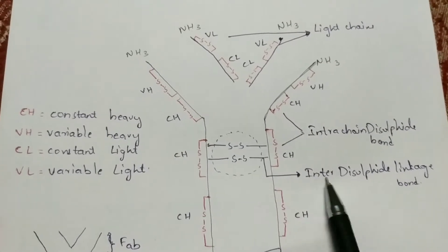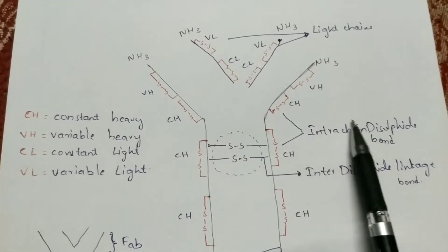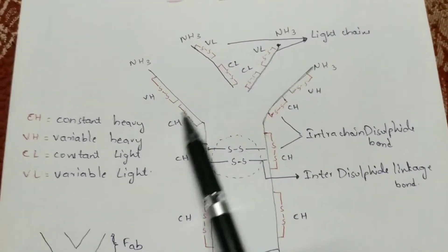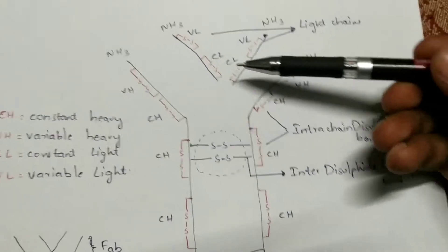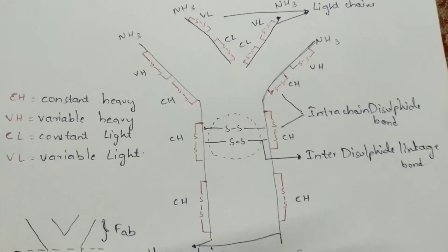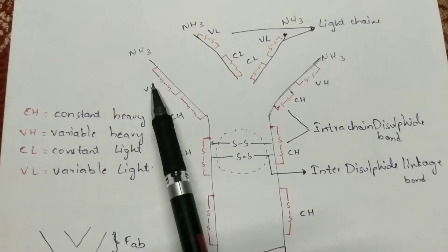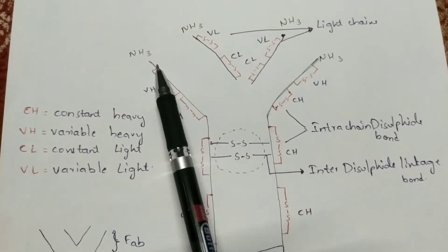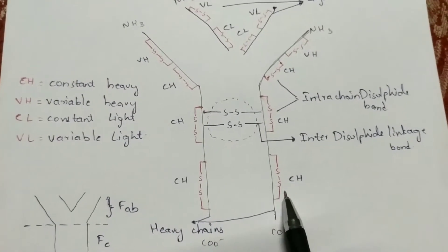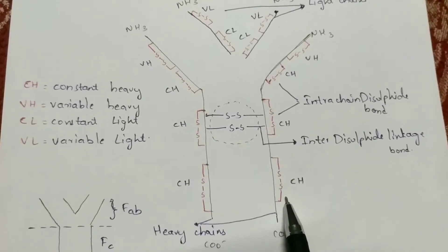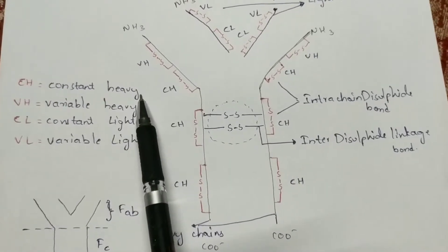The inter-chain disulfide linkage is present between the heavy chains, hence it is called inter. Intra means within — in the outside region, both the heavy chains and light chains consist of intra-chain disulfide linkage bonds. The notation used here is CH, CH, CH, and VH for heavy chains, and CL, VL for light chains. Both ends consist of amino groups and carboxyl groups.